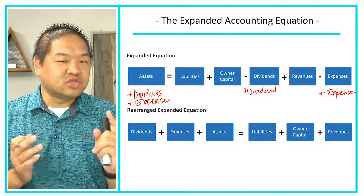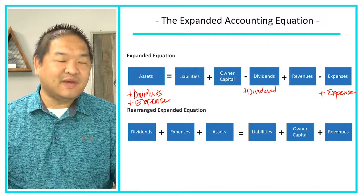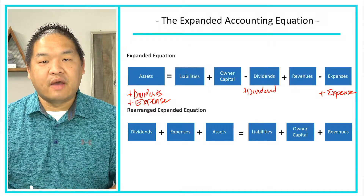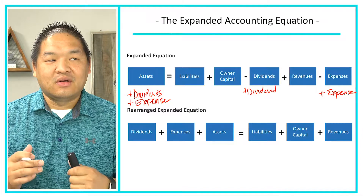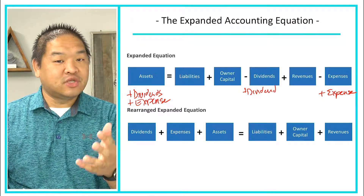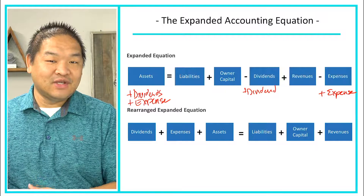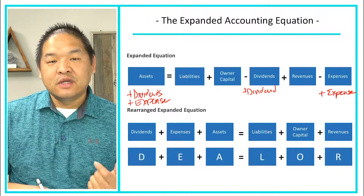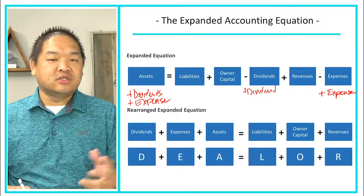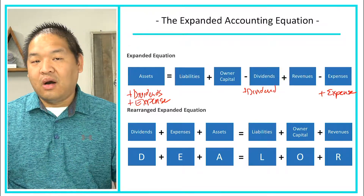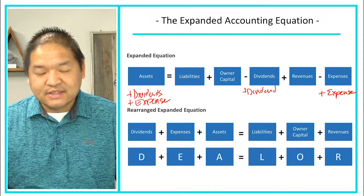There's a difference between remembering and knowing — remembering is short term, knowing is long term, and you want to know it. To help remember and truly know this long term, if we take the first letter of each term, we get something that spells out DEALER: D-E-A-L-O-R, which stands for Dividends, Expenses, Assets equals Liabilities, Owner's capital, plus Revenue.